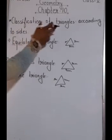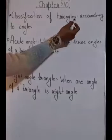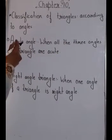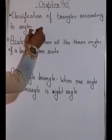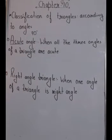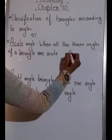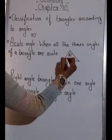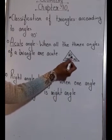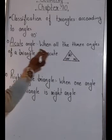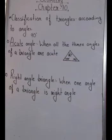Now we will study the classification of triangles according to their angles. The first is the acute angle triangle. An acute angle is one that is less than 90 degrees. If a triangle has angles of 80°, 50°, and 50°, all three angles are less than 90 degrees. When all three angles of a triangle are acute, it is called an acute angle triangle.